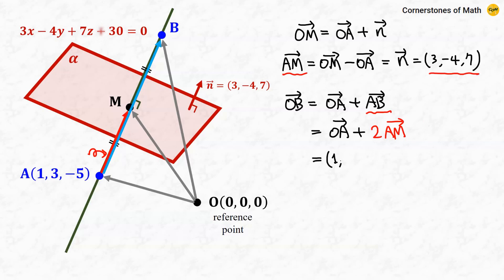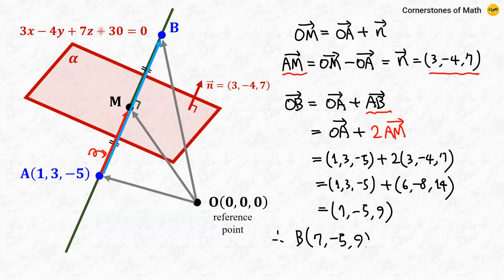So using this, we have (1, 3, -5) plus twice the vector (3, -4, 7). So we have (1, 3, -5) plus (6, -8, 14). So we have (7, -5, 9). Therefore, point B is given as (7, -5, 9).